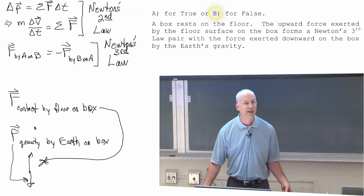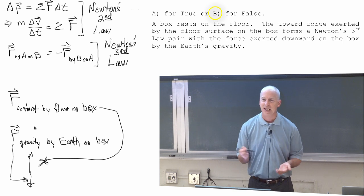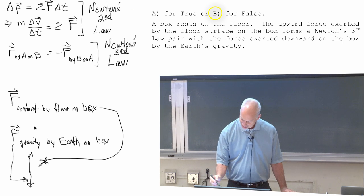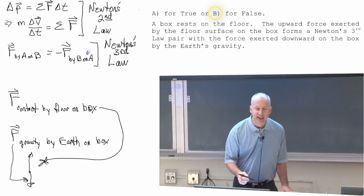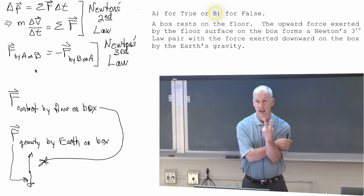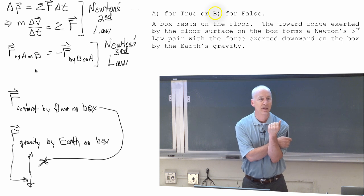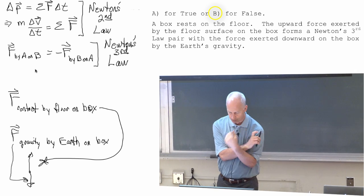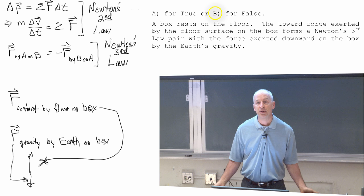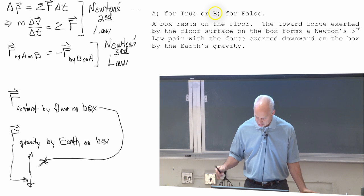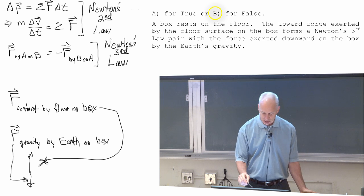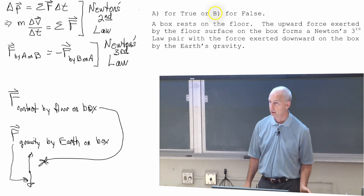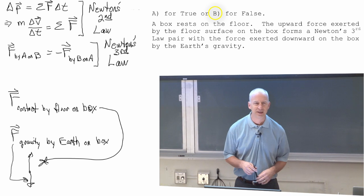The third tells us something about interactions that we have to think about and be careful about. And that is, each object, each of the two objects interacting, feels that interaction equally and oppositely. This statement is false because it's not Newton's third law that tells us that. These are not a Newton's third law pair. Any questions about that one?